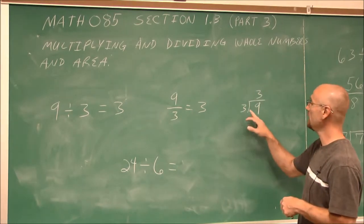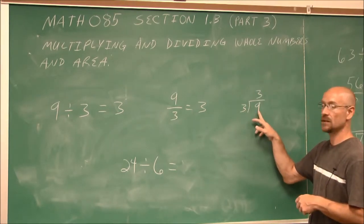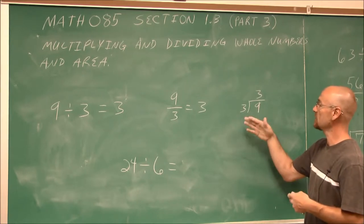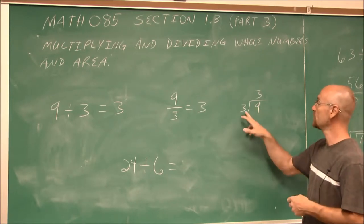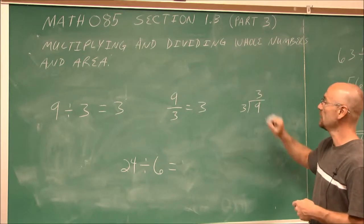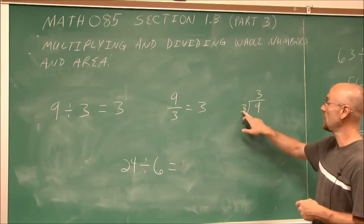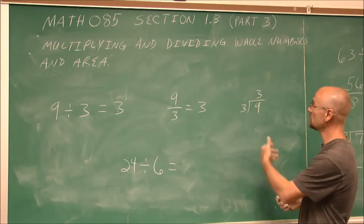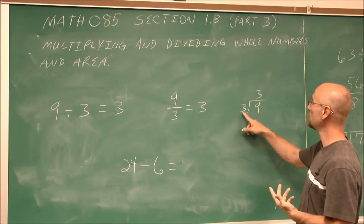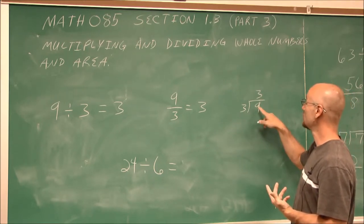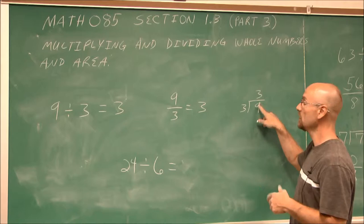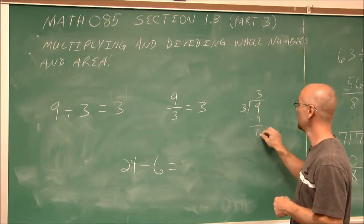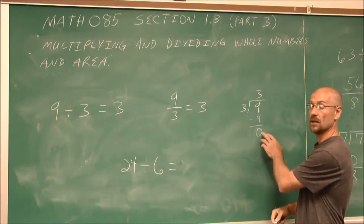How many times does 3 go into 9? That's how we would state this — it's the same as saying, how many times can I subtract 3 from 9? 3 goes into 9 three times, because 3 times 3 is 9. Essentially what we're doing is: 3 goes into 9 three times. 3 times 3 is 9. If I subtract that, it evenly divides — nothing remains.